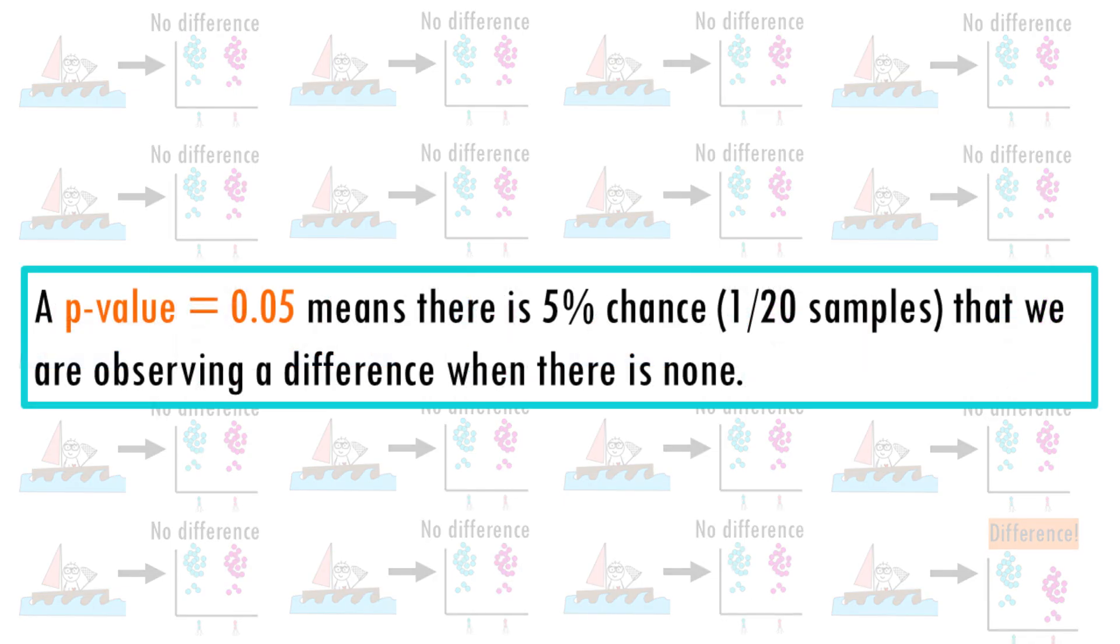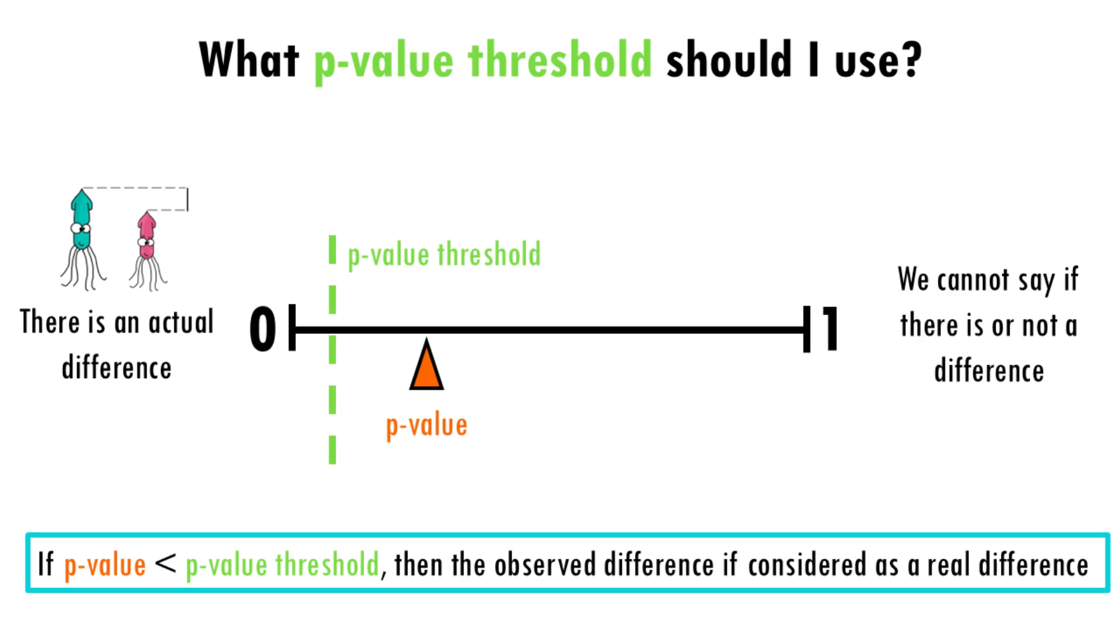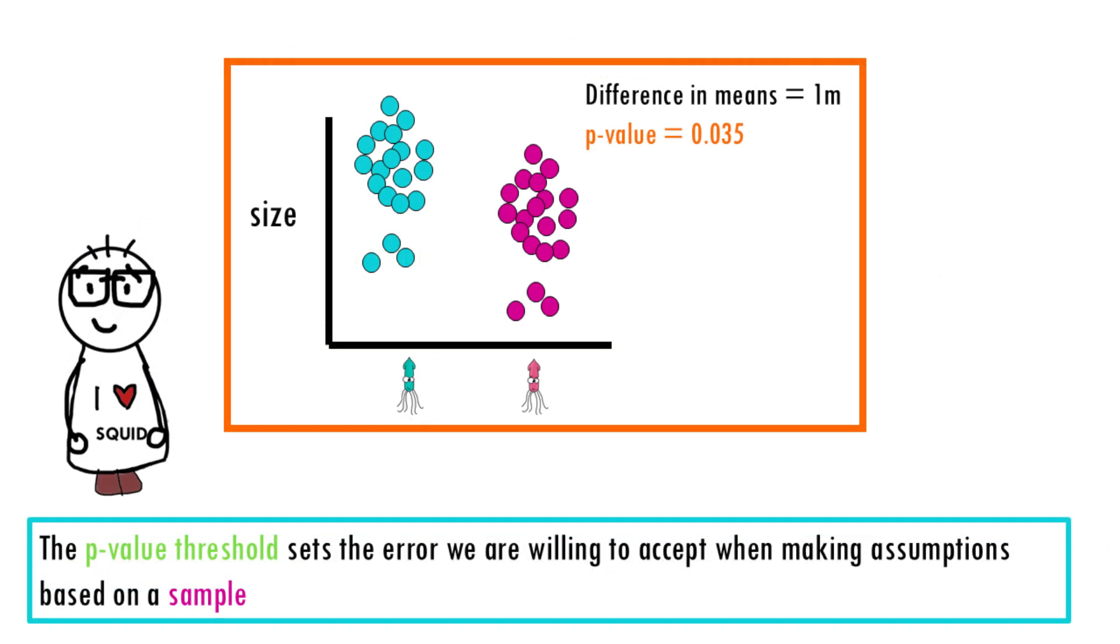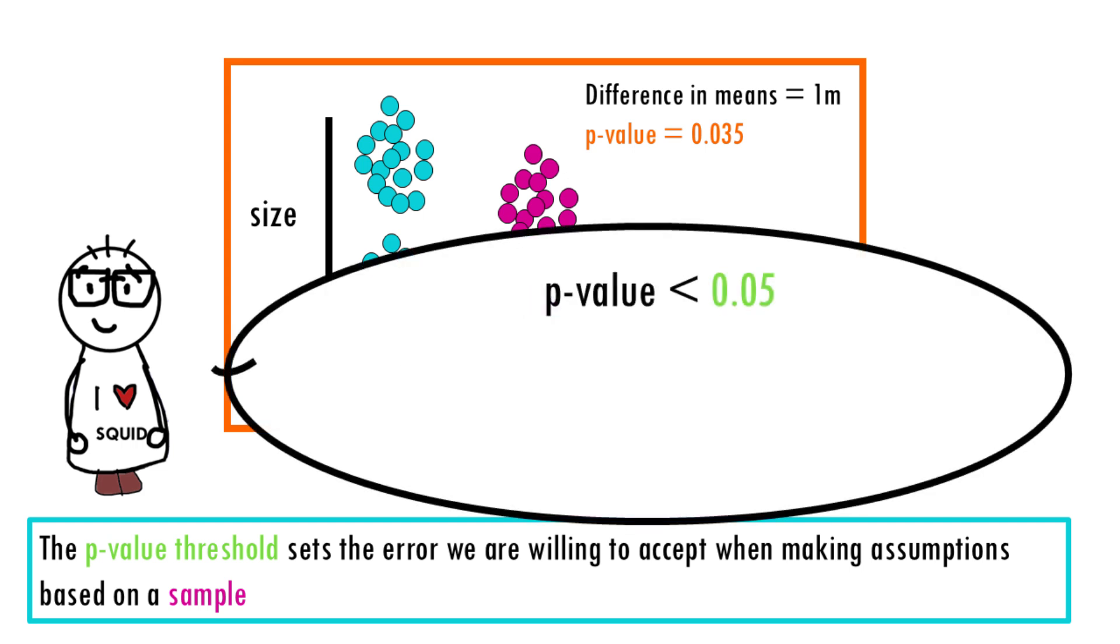In research, we usually use a p-value cutoff of 0.05 or 0.01, depending on how stringent we want to be. The p-value basically sets the error we are willing to accept when making assumptions based on a sample. That is why we often see that the results with a p-value lower than 0.05 are considered statistically significant.